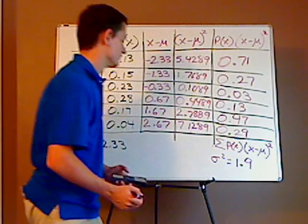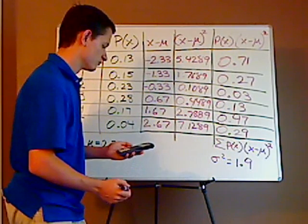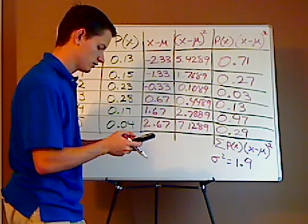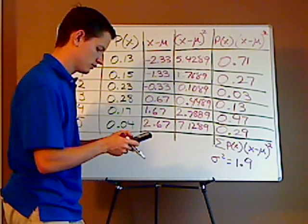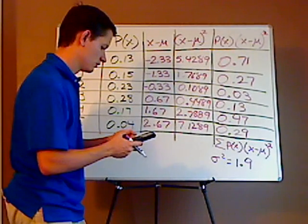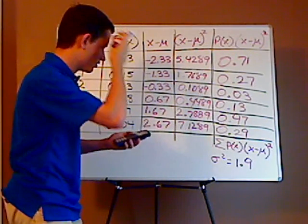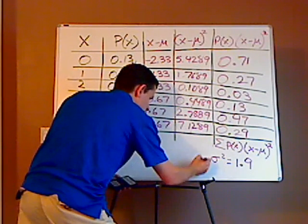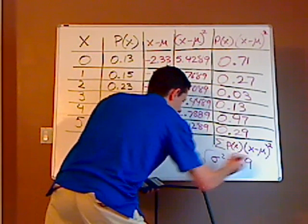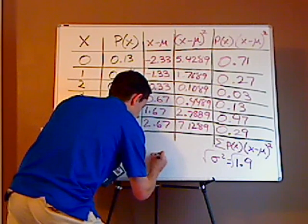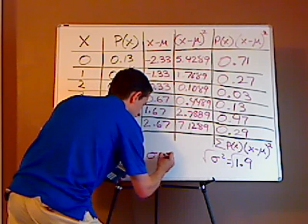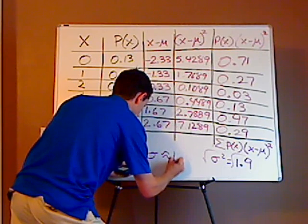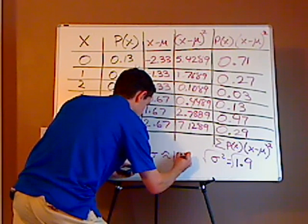I guess I didn't have to round to two decimal places. And then you take the square root of that, which you're going to have to round. So it would be approximately, you take the square root, and the standard deviation is approximately 1.4.